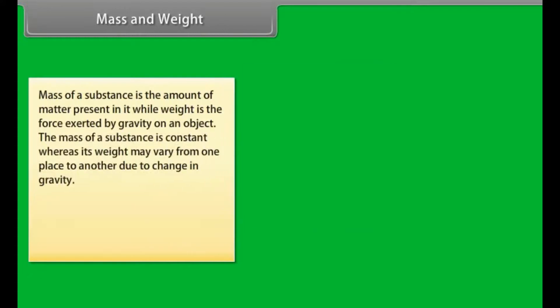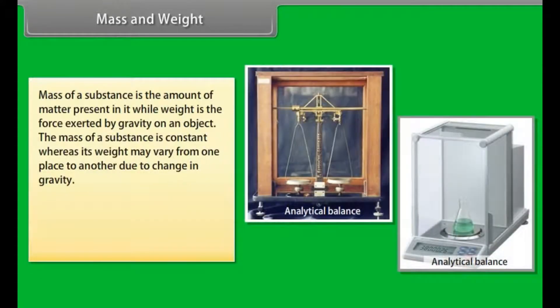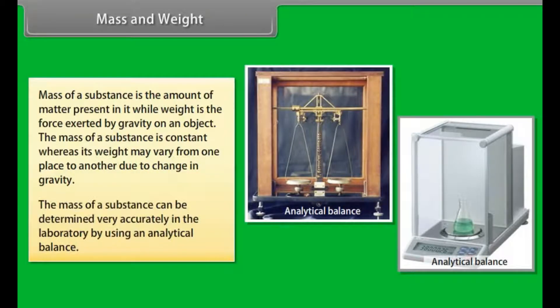Mass and Weight: Mass of a substance is the amount of matter present in it, while weight is the force exerted by gravity on an object. The mass of a substance is constant, whereas its weight may vary from one place to another due to change in gravity. The mass of a substance can be determined very accurately in the laboratory by using an analytical balance.